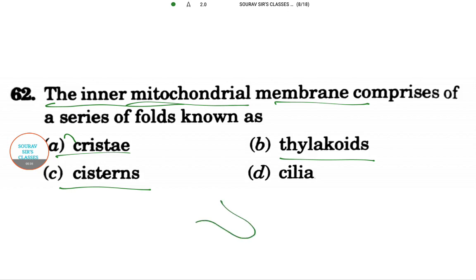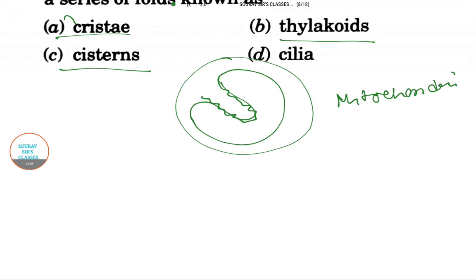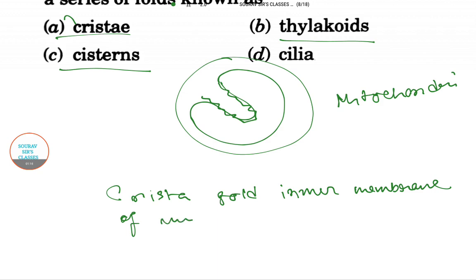Cristae is a fold in the inner membrane of mitochondria. If this is mitochondria, then it has a folded structure like this. So cristae is a fold in the inner membrane of mitochondria.